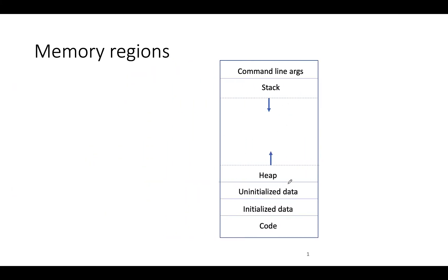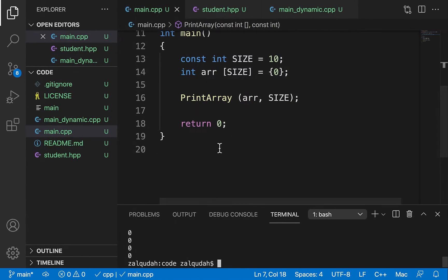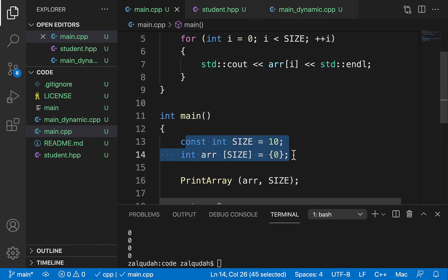This operating system process has a layout for my program that looks like this — it has a number of regions. There's a code region where the executable file is loaded into memory from disk. There are also important other regions such as the runtime stack and the heap.